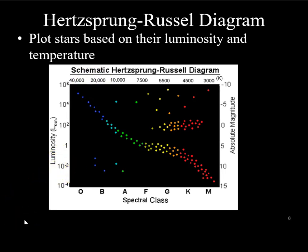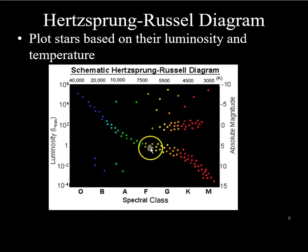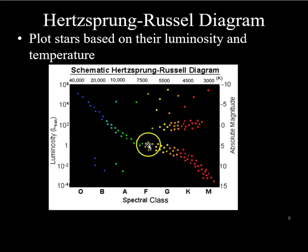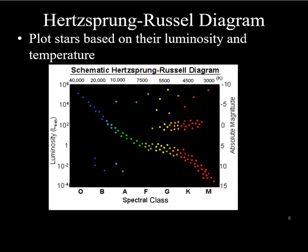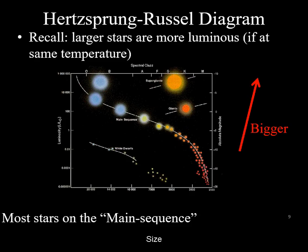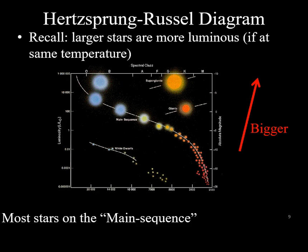Our Sun is a main sequence star that is medium brightness and medium temperature. Size is not directly represented in the diagram, nor is mass.